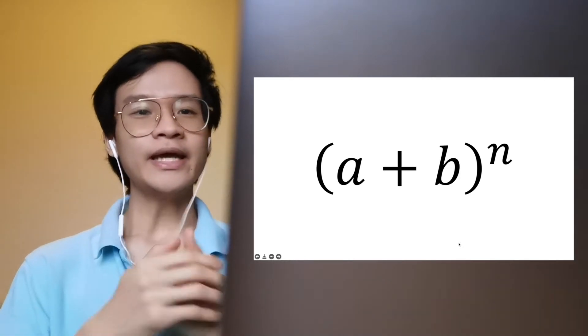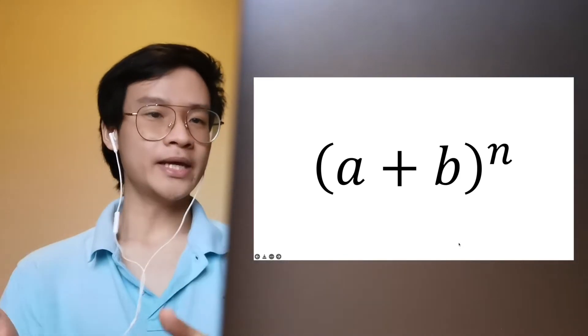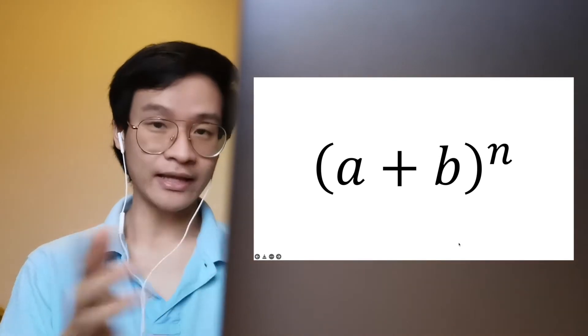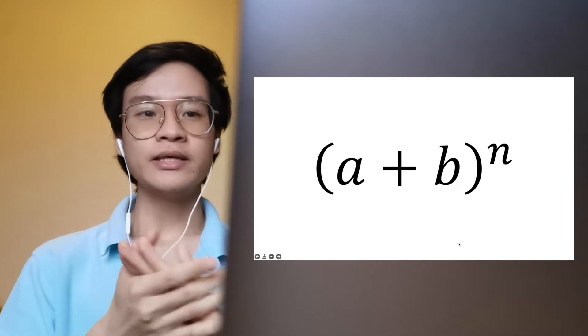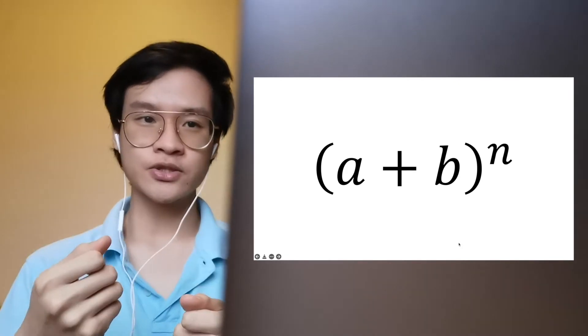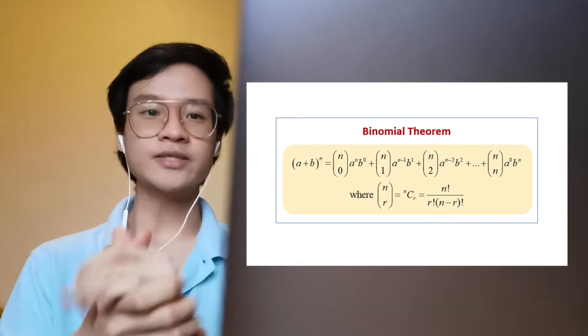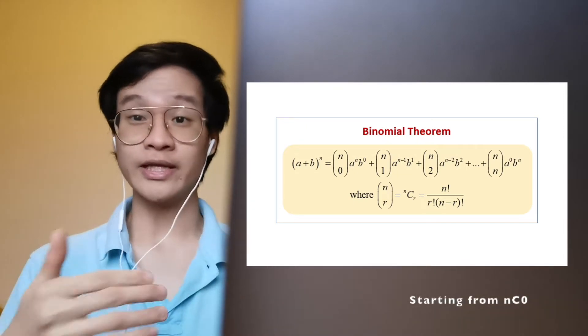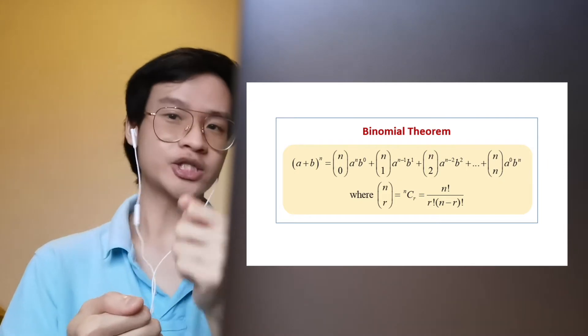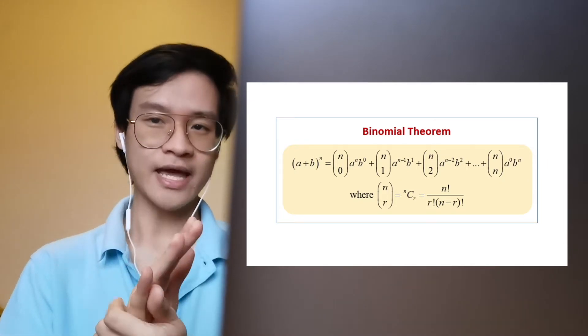So you go from nC1, nC2, nC3, and so on to determine the coefficient of each term and stop at nCn. There is this limit here to this expansion.